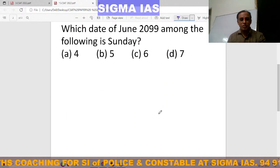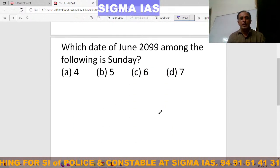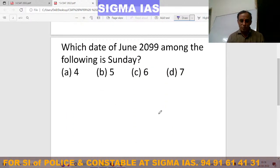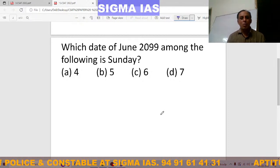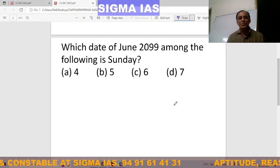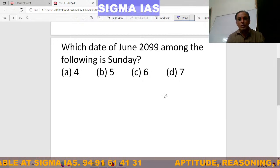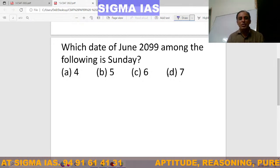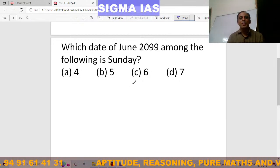Now one question is: which date of June 2099, among the following, is a Sunday?